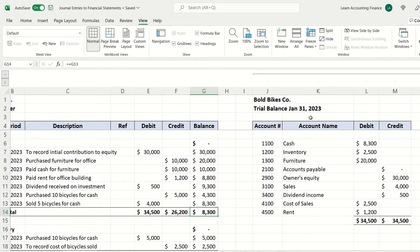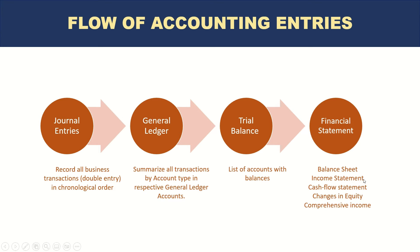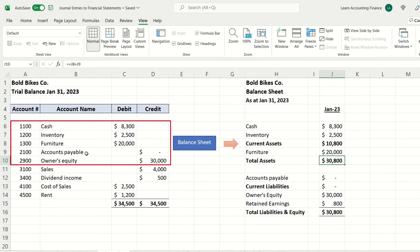This trial balance is a very important report. From it, we prepare financial statements, which include the balance sheet, income statement (also known as the profit and loss statement), cash flow statement, changes in equity, and comprehensive income. We will look at the balance sheet, income statement, and cash flow from the entries we've learned so far, and changes in equity and comprehensive income a little later.